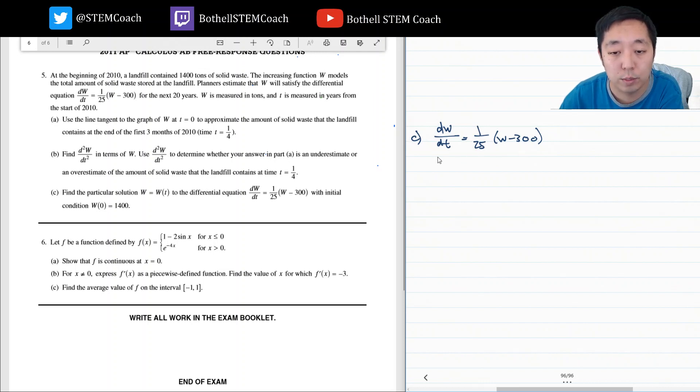So we're going to bring the W down here. So I get dW over W minus 300 equals, bring the dt up, 1 over 25 dt. I integrate both sides, and I get, this is the natural log of W minus 300. Now, why don't I have an absolute value? Because I know W starts off above 300, so I know that this quantity is positive.